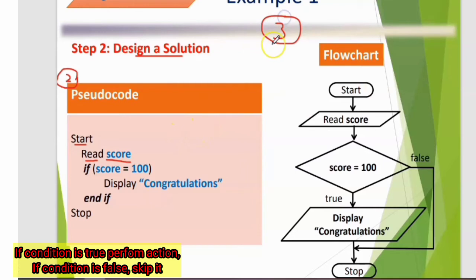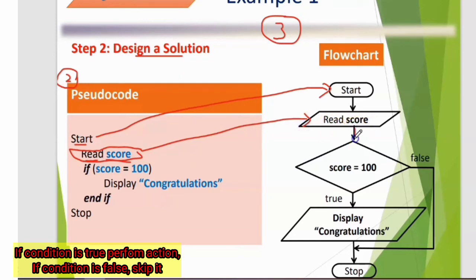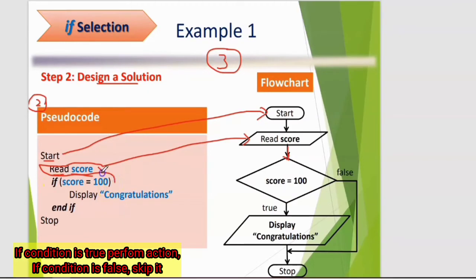Third step: draw the flowchart using suitable symbols. Start with the capsule shape for 'Start'. Then use the parallelogram shape for 'Read score' — this is input. For the condition, use the decision symbol — the diamond shape. Write the condition inside the diamond: score = 100. It checks the condition and evaluates true or false. If true, the computer displays 'Congratulations' — use the parallelogram shape for this output statement.